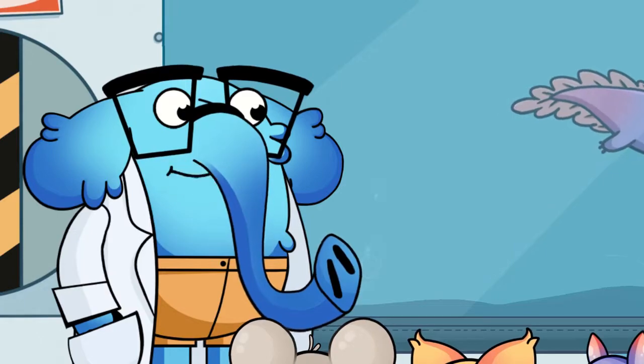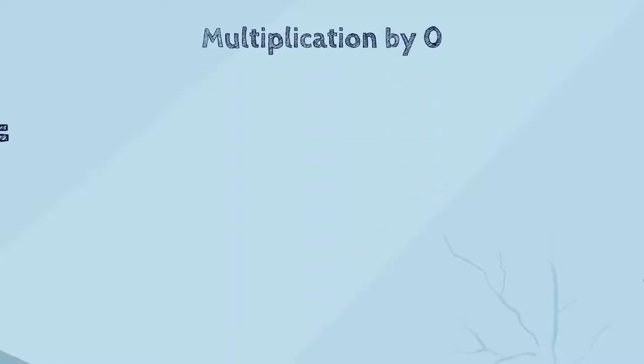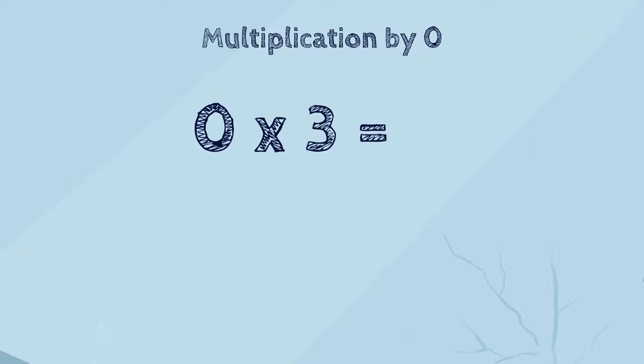So now let's look at multiplication by zero. Let's think what zero multiplied by three means. It means that we have three groups of nothing. What will it be in total? Nothing? Yes! Sure! It will be nothing or zero.